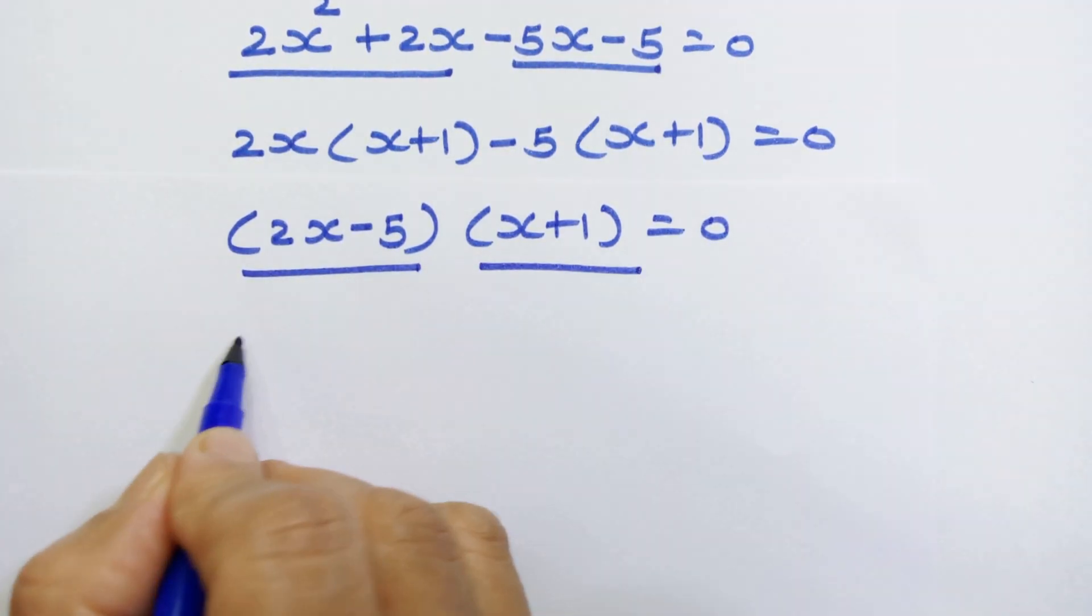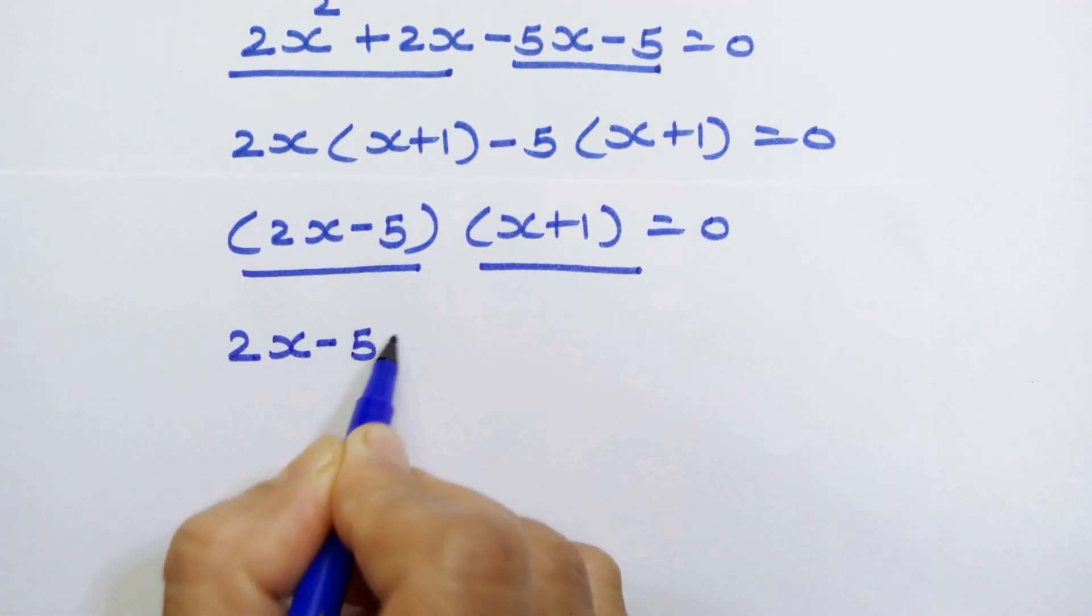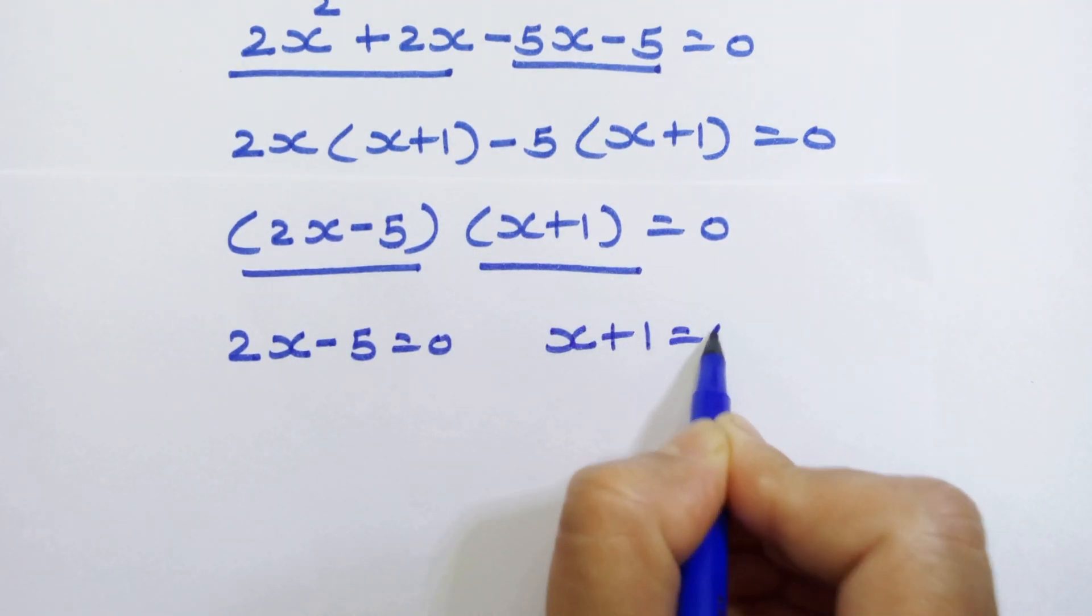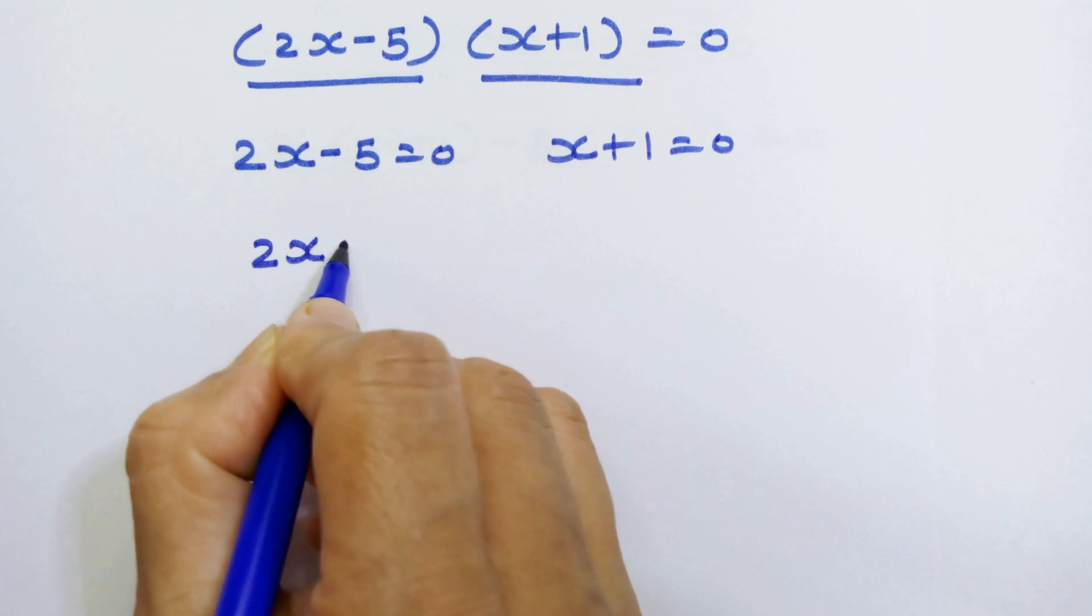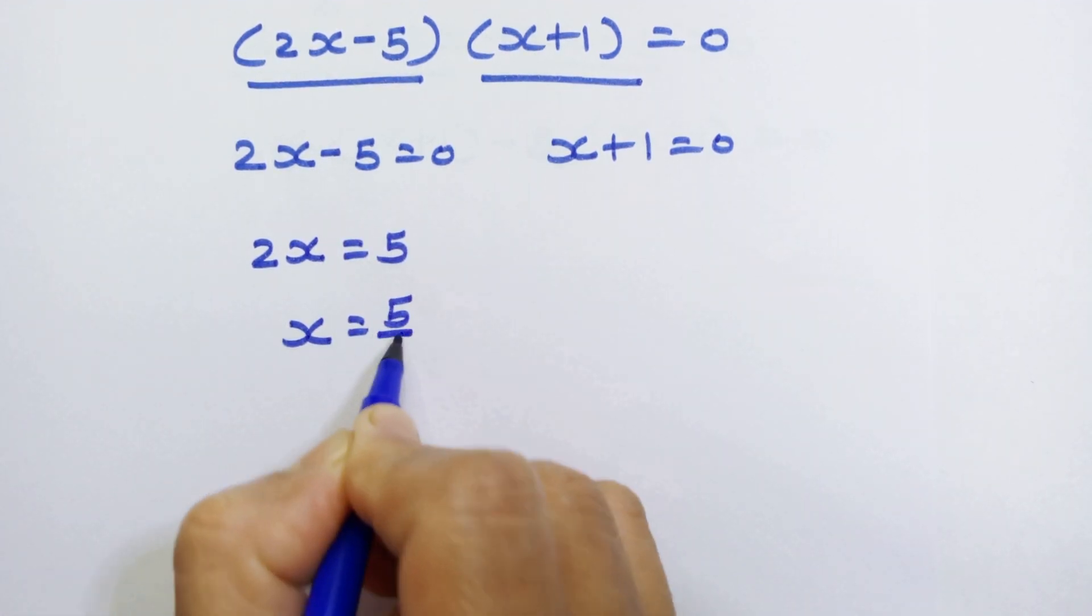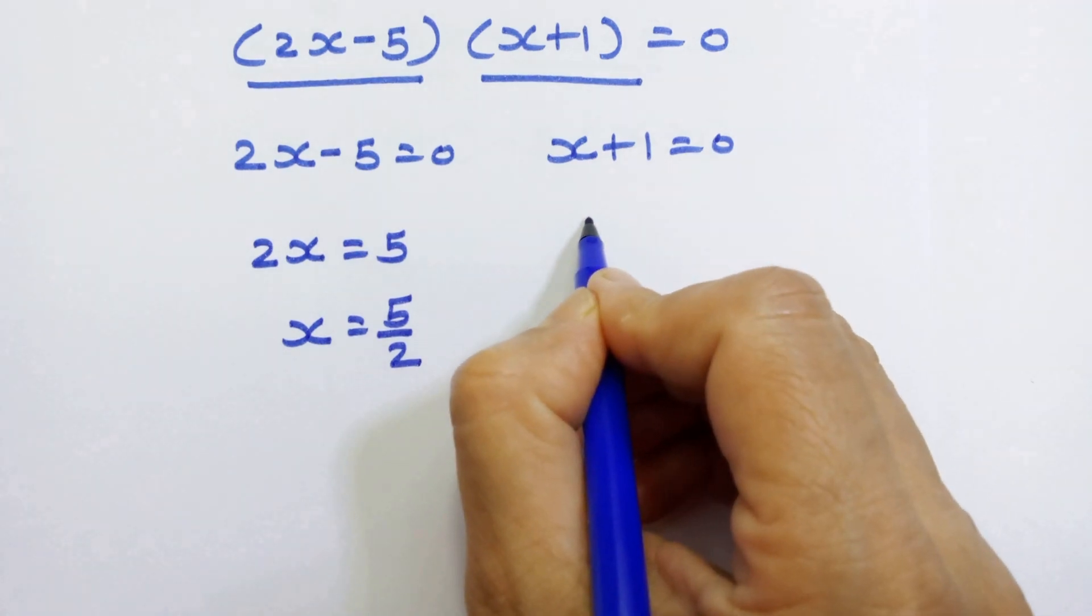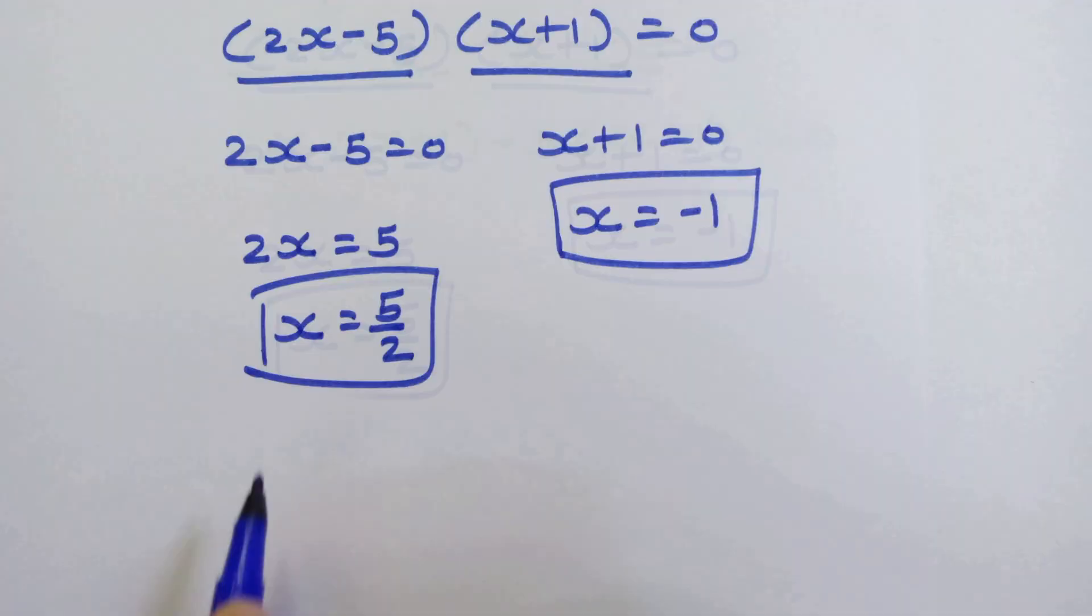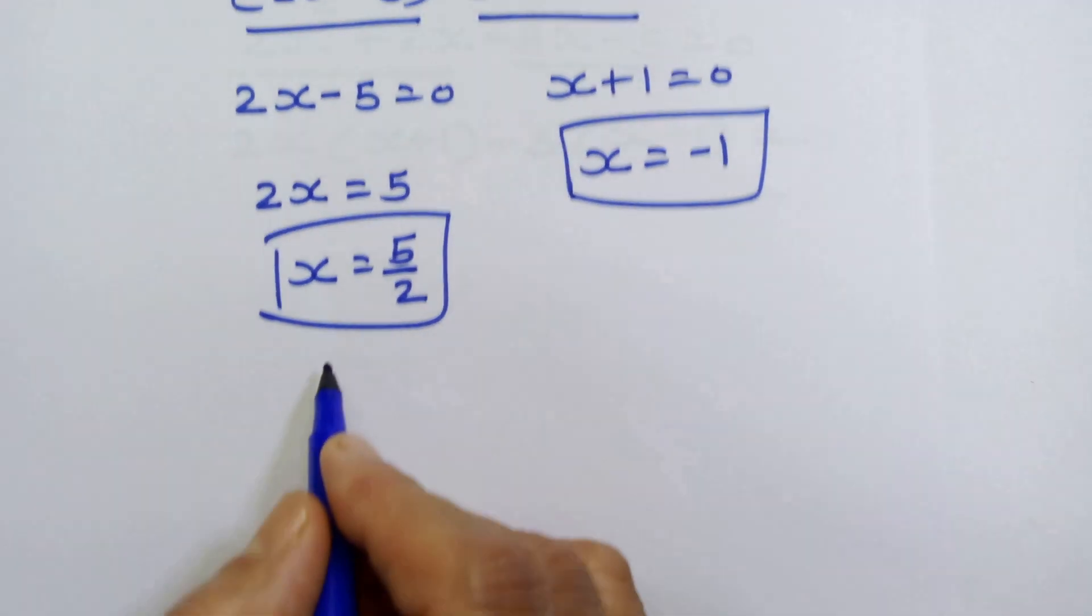Now we have 2 possibilities here. 2x minus 5 is equal to 0 and x plus 1 is equal to 0. 2x is equal to 5. So x is equal to 5 upon 2. Now here x is equal to minus 1. Now we have 2 values of x.